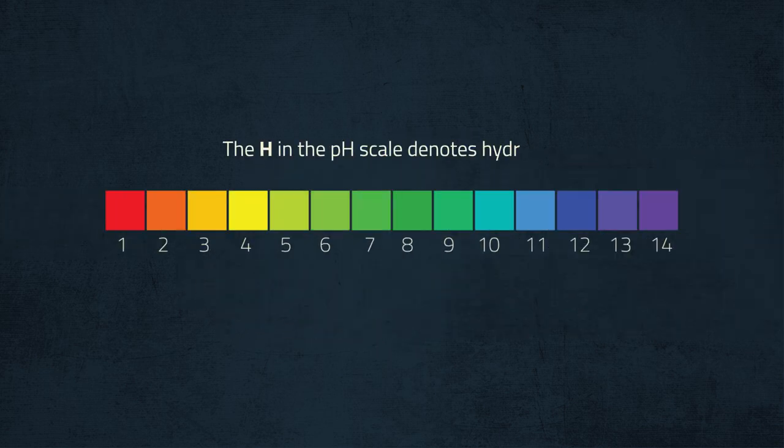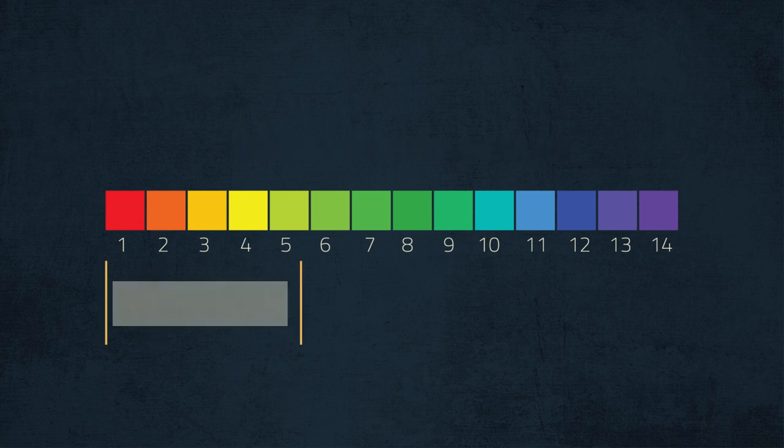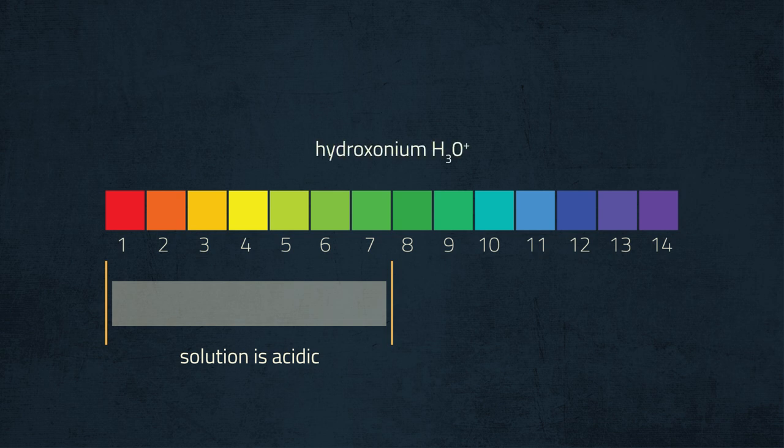The H in the pH scale denotes hydrogen. It represents the concentration of hydrogen ions in water. When the pH is lower than 7, the solution is acidic, and it is the hydrogen, or more strictly the hydronium ion, that makes the acids reactive.